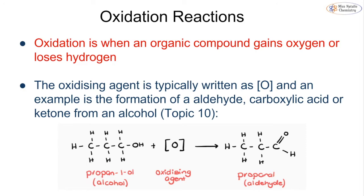An oxidation reaction—this time we're not looking at it in terms of redox reactions with electrons like we looked at in topic 8. This time we're looking at it in terms of oxygen and hydrogen. Oxidation is when an organic compound gains oxygen or loses hydrogen. The oxidizing agent is typically written just as a capital O in brackets because it tends to be quite complicated, so we simply say this is a source of oxygen. An example is the formation of an aldehyde, carboxylic acid, or ketone from an alcohol, which you'll discuss in topic 10 and topic 15 of A2.